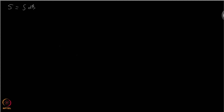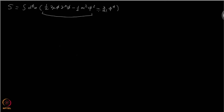We were looking at this theory, which is described by the following action. As you know, this is an interacting theory. If we keep only terms which are quadratic and do not include the quartic term, then that theory is a free theory. So if you have only terms up to the quadratic part in the action, then that is a free theory.